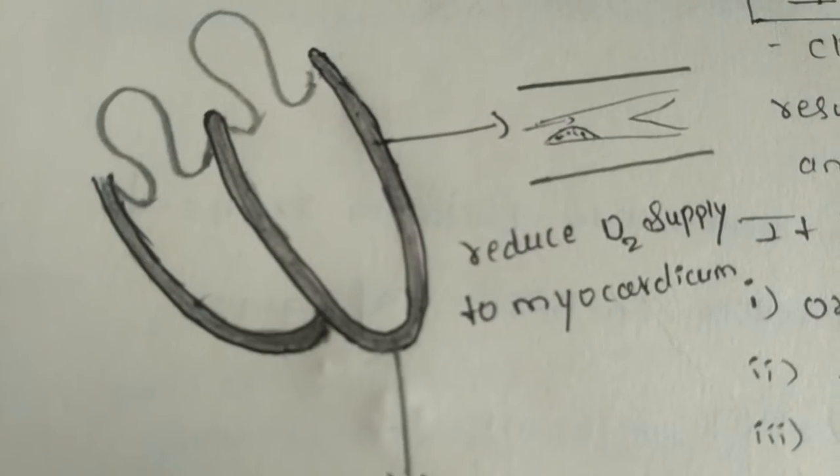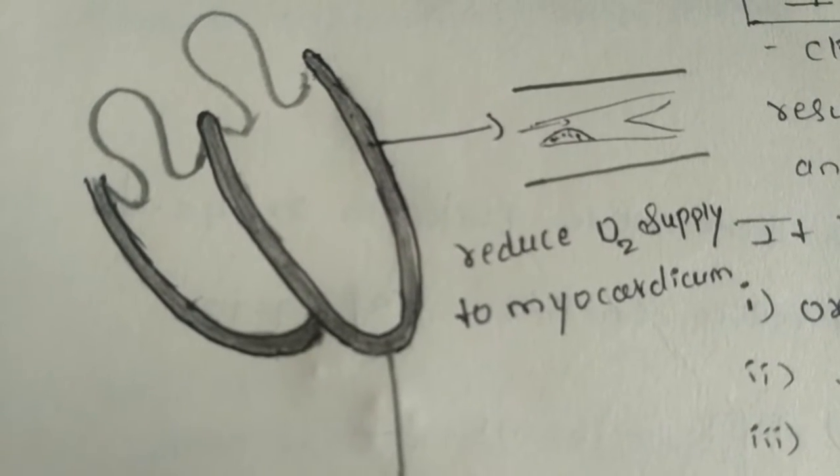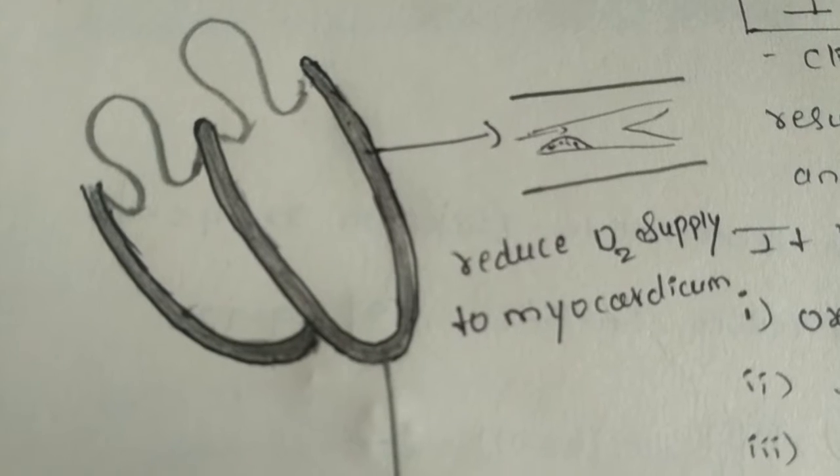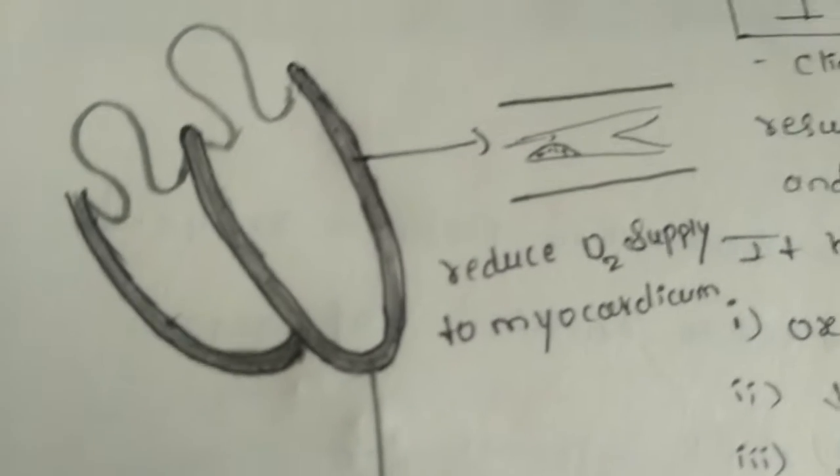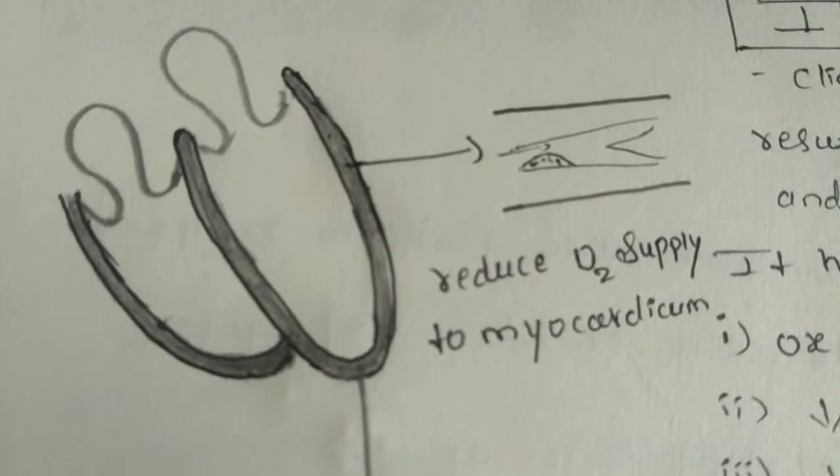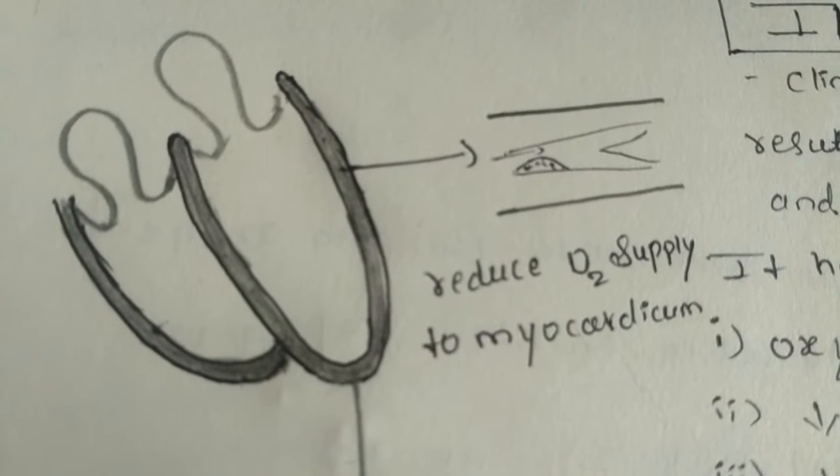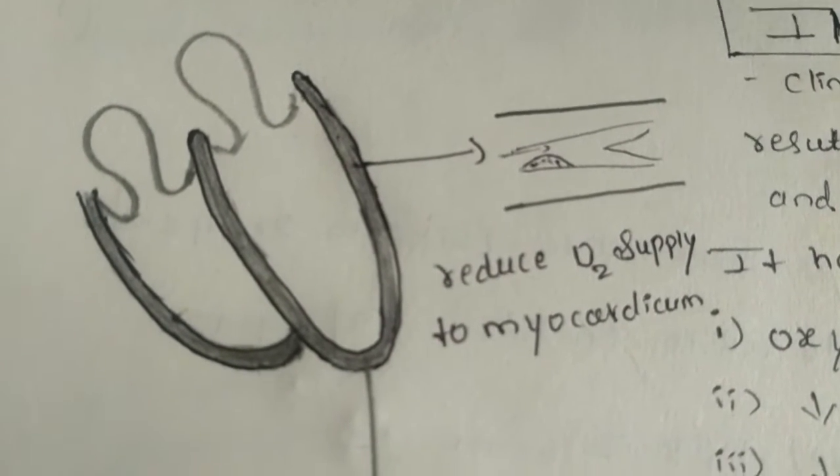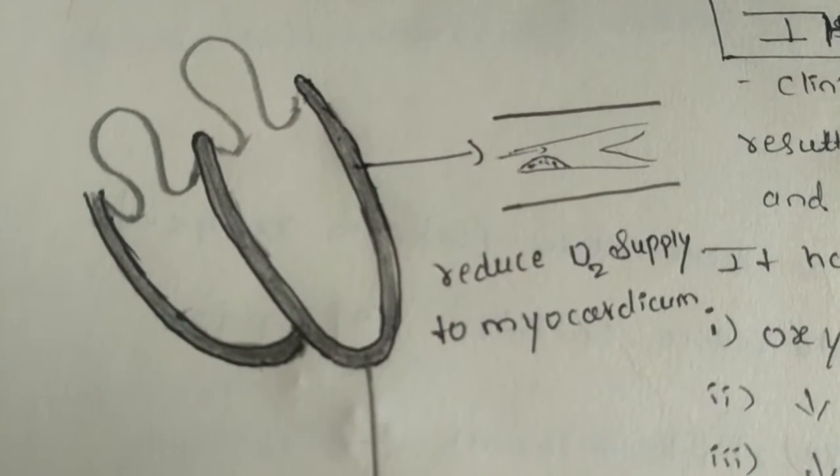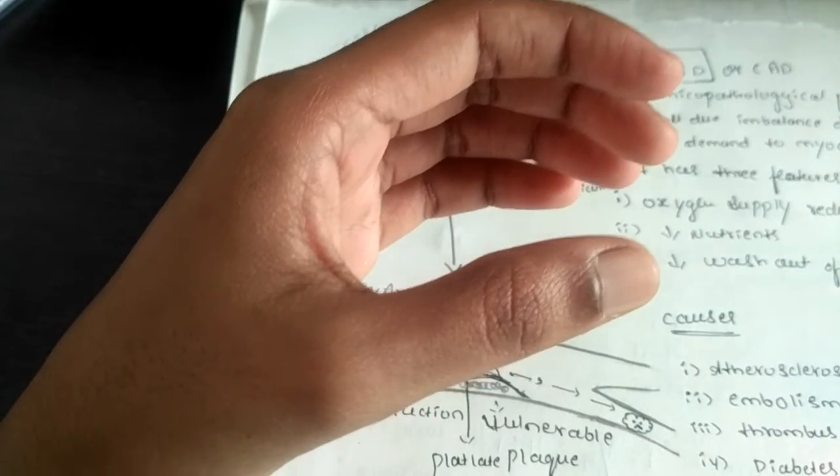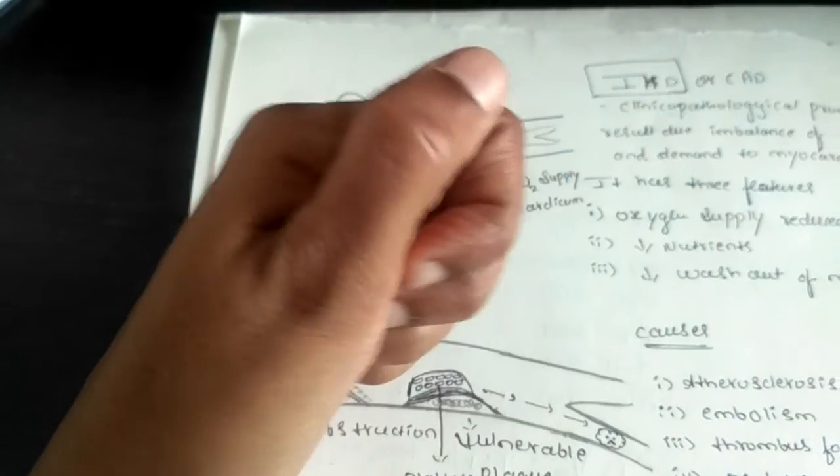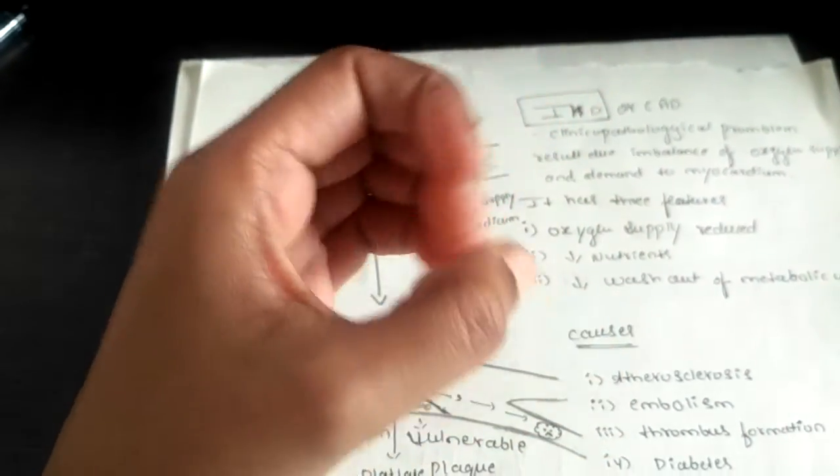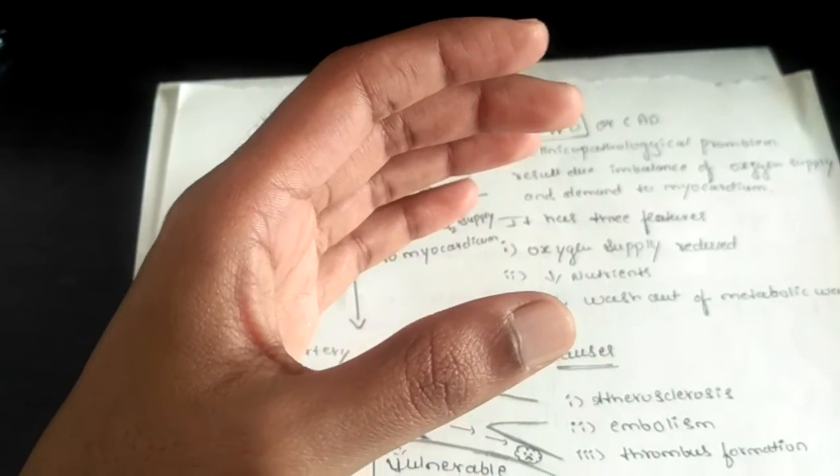What does it mean that the imbalance of oxygen supply and demand to the myocardium? Myocardium is our cardiac tissue which is responsible for squeezing the blood. As the myocardium squeezes, as the myocardium contracts the blood, the myocardium is mainly responsible for contracting the blood during systole and diastole.